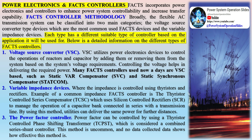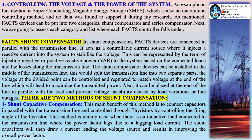Variable impedance devices have their impedance controlled using thyristors and rectifiers. A common example is the thyristor controlled series compensator (TCSC), which uses silicon controlled rectifiers (SCR) to manage the operation of a capacitor bank connected in series with a transmission line. By using this method, utilities can deliver the same power over further distances. The power factor can also be controlled using a thyristor controlled phase shifting transformer (TCPST), which is considered a combined series-shunt controller. This method is uncommon and no collected data shows how effective it is.